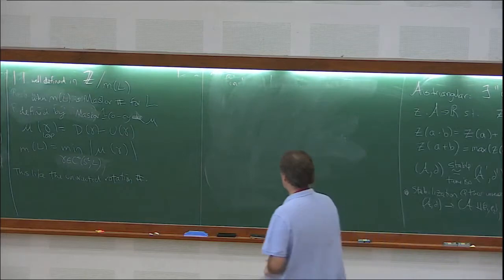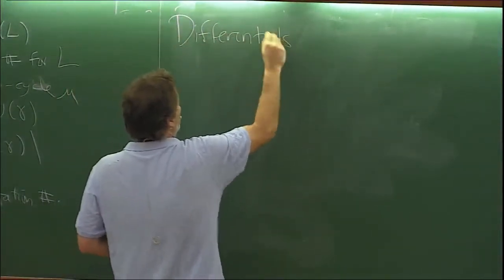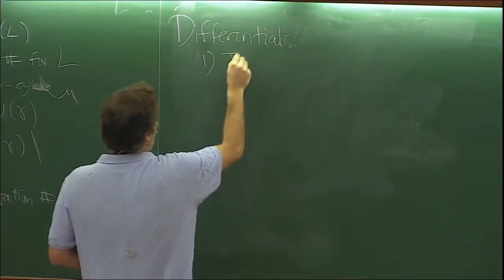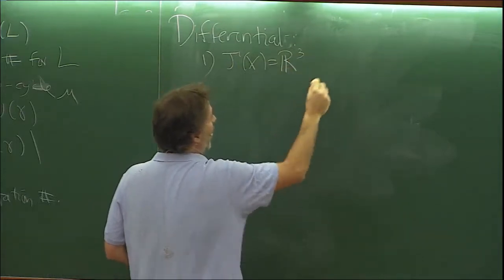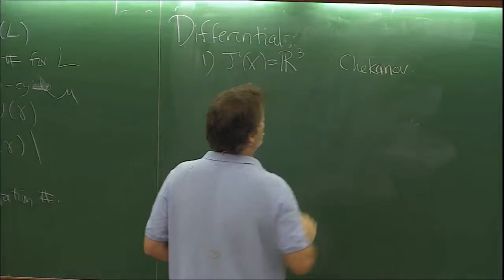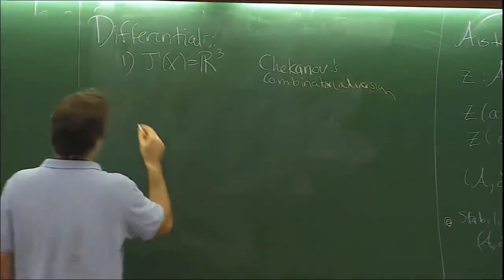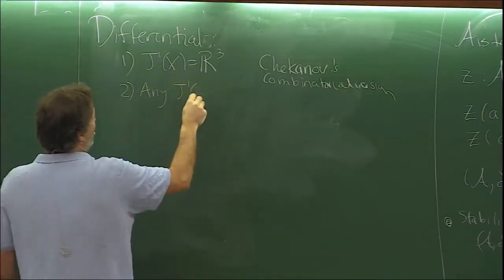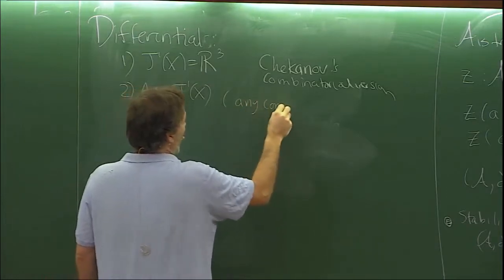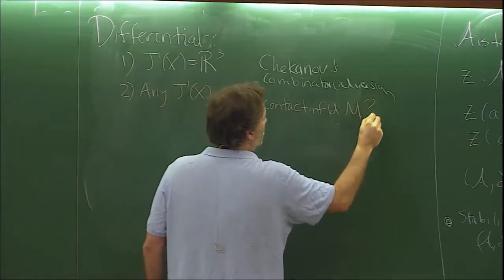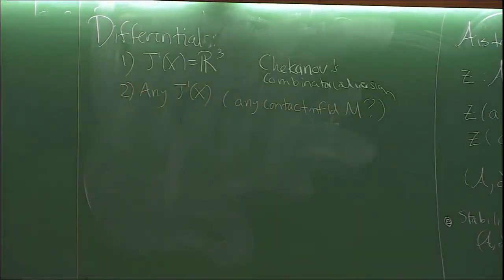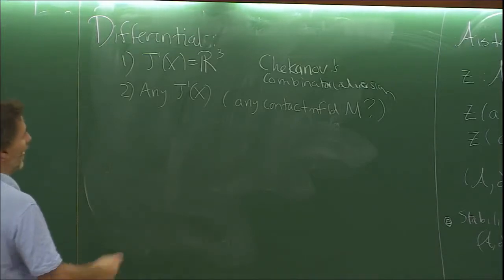Now for the differential, I'll give two different versions. The first is the easier case when J1 of X is standard contact R3. This is due to Chekanov, and it's combinatorial. The second version is more general — for any J1X and to some extent any contact M — but there are deep problems that make the theory not work, and technical problems where morally it should work but proving it is still in progress. This version uses pseudo-holomorphic curves.